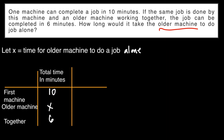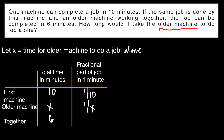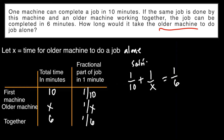If they work for 1 minute, what will be the fractional part of the job? Since the first machine can do the job in 10 minutes, it can do 1 over 10 of the job in one minute. For the older machine, that will be 1 over x. And if they work together, they can do 1 over 6 of the job. So to solve for x, we have 1 over 10 plus 1 over x equals 1 over 6.